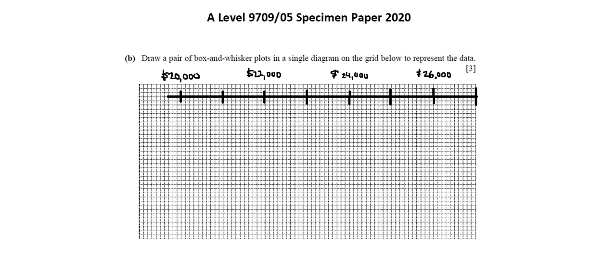Those will be my two whisker ends. From question A, we have identified the median as 22,700. Q1 is 21,700. Q3 is 24,000. So, I'm going to use those five data points and create my box and whisker plot for females.